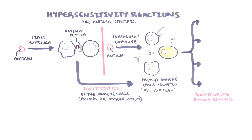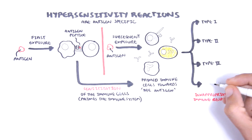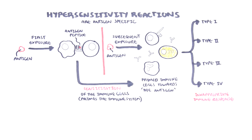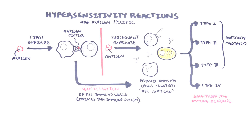The immune system can cause hypersensitivity reactions in different ways, and that is why hypersensitivity reactions can be subdivided into four main types. Type 1, type 2, and type 3 hypersensitivity reactions are antibody-mediated, whereas type 4 is a cell-mediated hypersensitivity reaction.